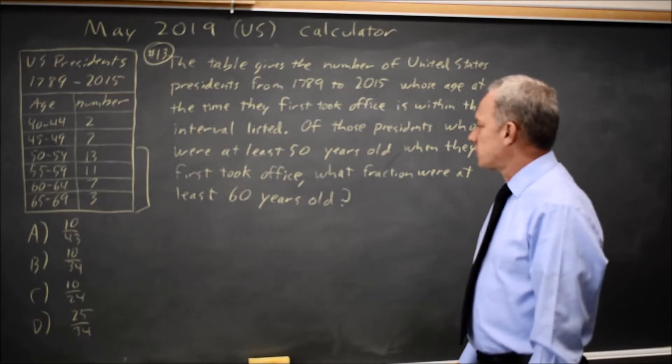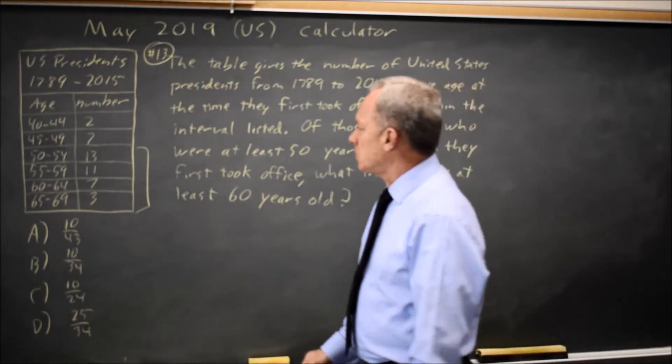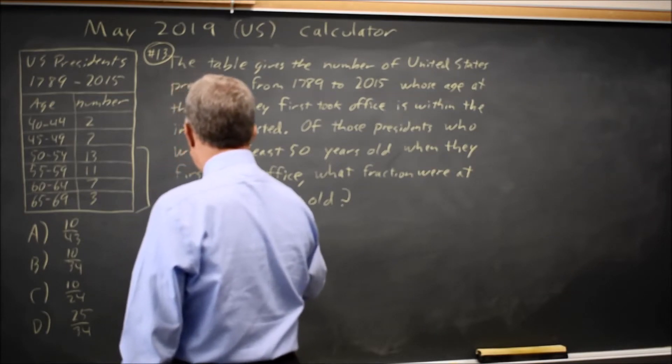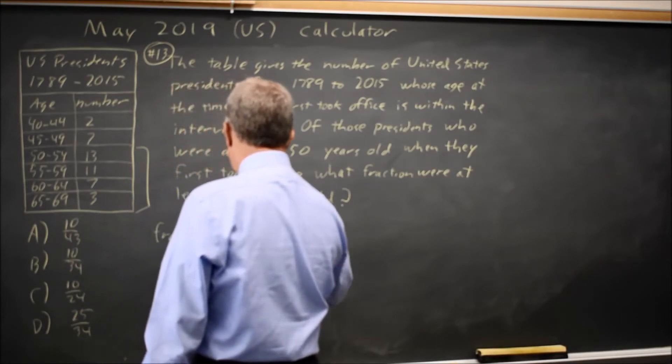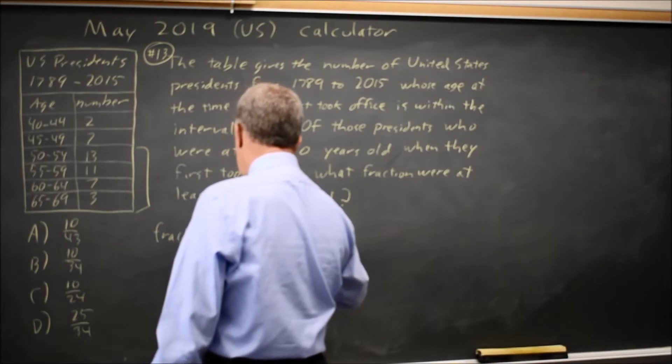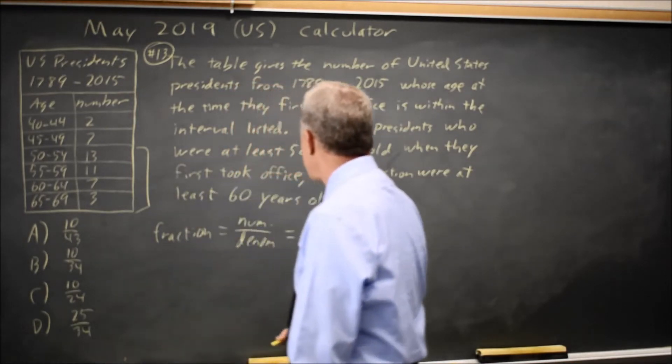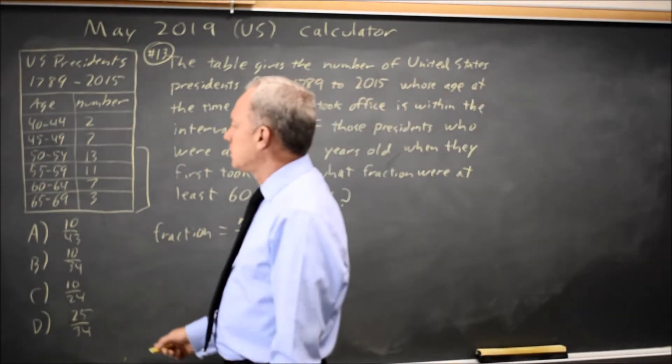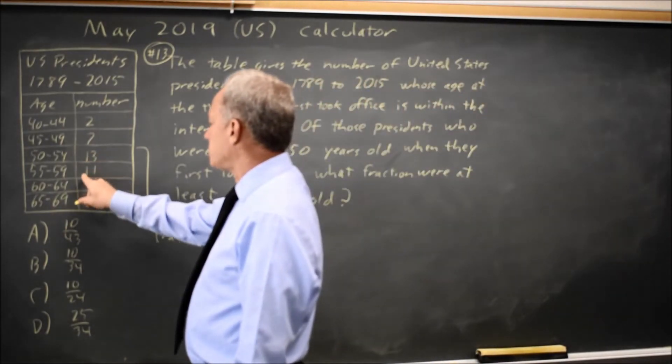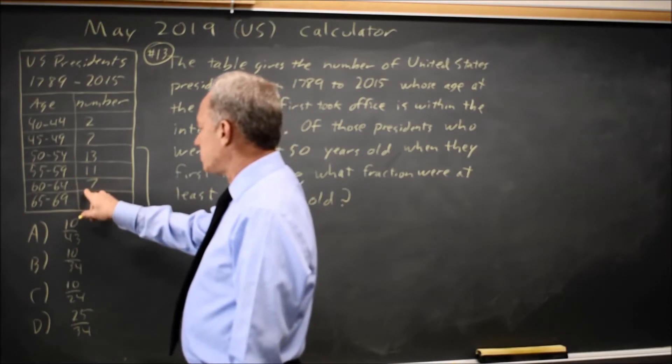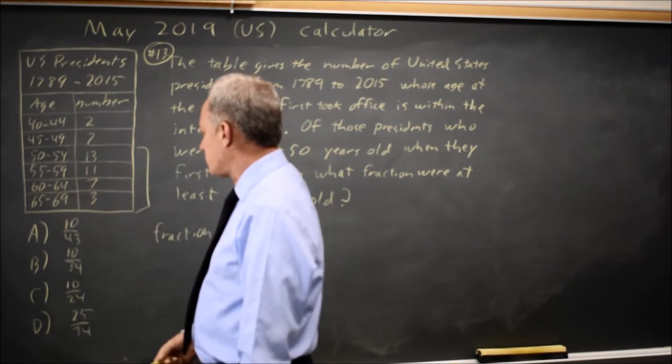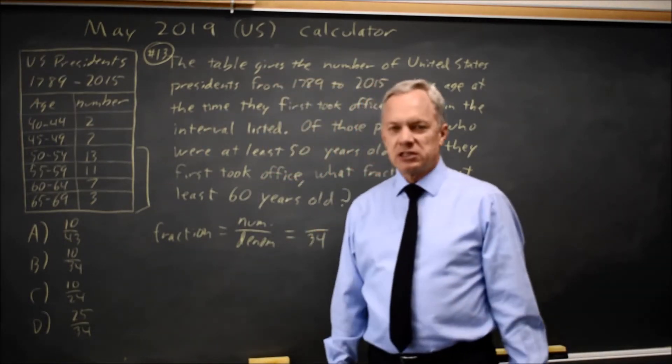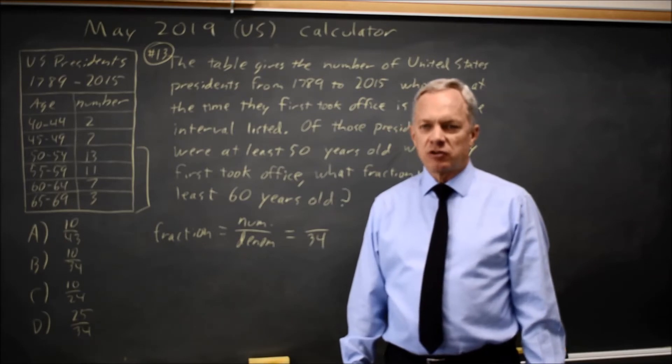what fraction were at least 60 years old? So the fraction is a numerator over a denominator, where the denominator is what I always find first, and that's of all individuals you could choose. So that's these, 13 plus 11 is 24, plus 7 is 31, plus 3 is 34. The denominator is 34. All individuals who were at least 50 is 34 presidents.